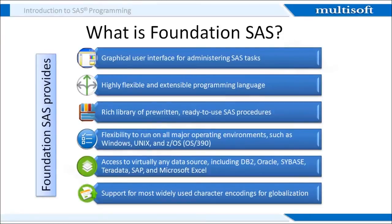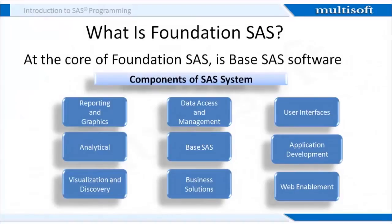Foundation SaaS has the flexibility to run on all major operating environments such as Windows, Unix, and ZOS. You get access to virtually any data source such as DB2, Oracle, Sybase, Teradata, SAP, and Microsoft Excel, with support for the most widely used character encodings for globalization. At the core of Foundation SaaS is the Base SaaS software. The components of the SaaS system include SaaS Base, SaaS Graphs, SaaS ODS, SaaS Access, SaaS Stat, and SaaS ETS, with many more packages also available.